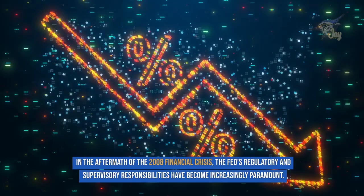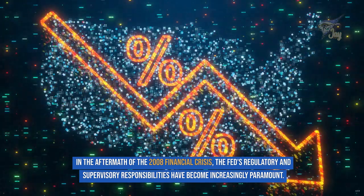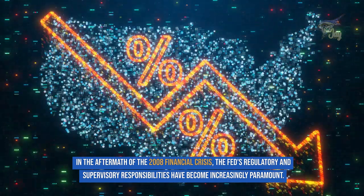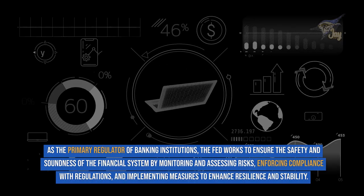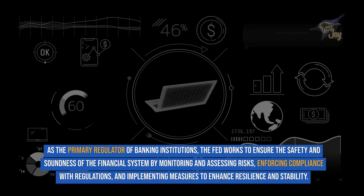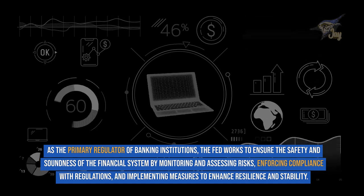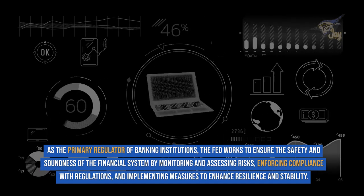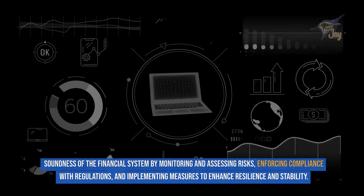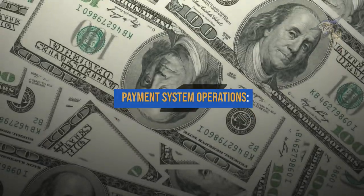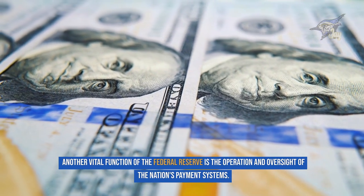In the aftermath of the 2008 financial crisis, the Fed's regulatory and supervisory responsibilities have become increasingly paramount. As the primary regulator of banking institutions, the Fed works to ensure the safety and soundness of the financial system by monitoring and assessing risks, enforcing compliance with regulations, and implementing measures to enhance resilience and stability.